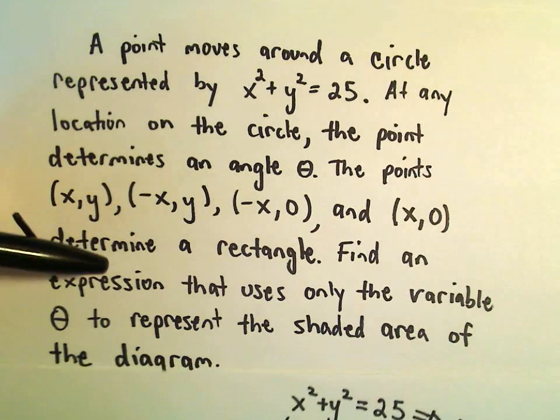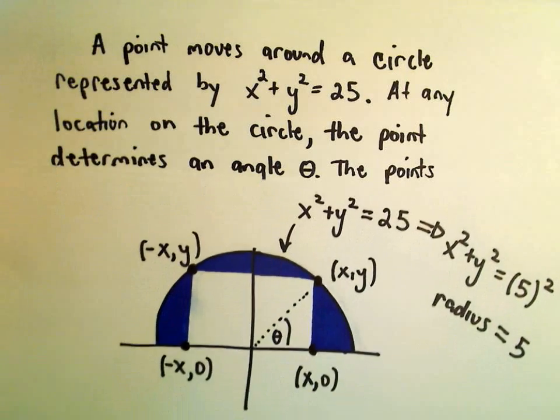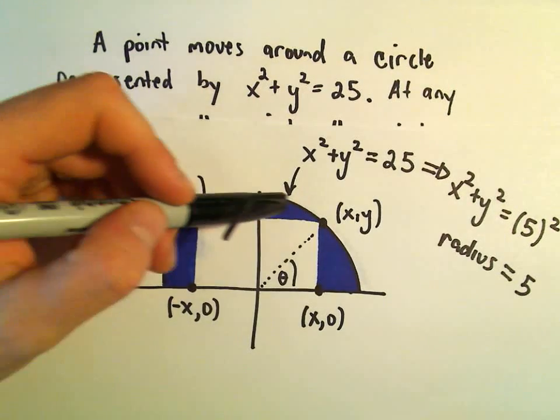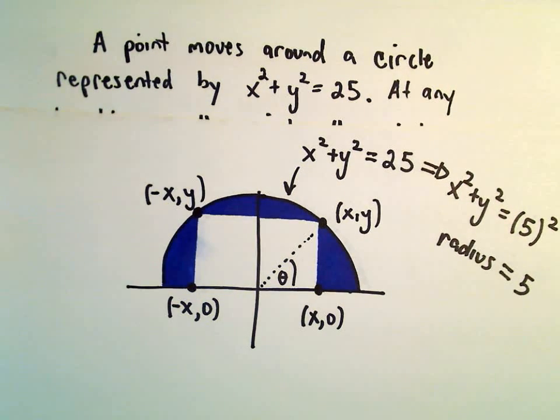What we want to do is find an expression that uses only the variable theta to represent the shaded area. So we just want to find this shaded area in blue, sort of inside the circle, but outside the rectangle.